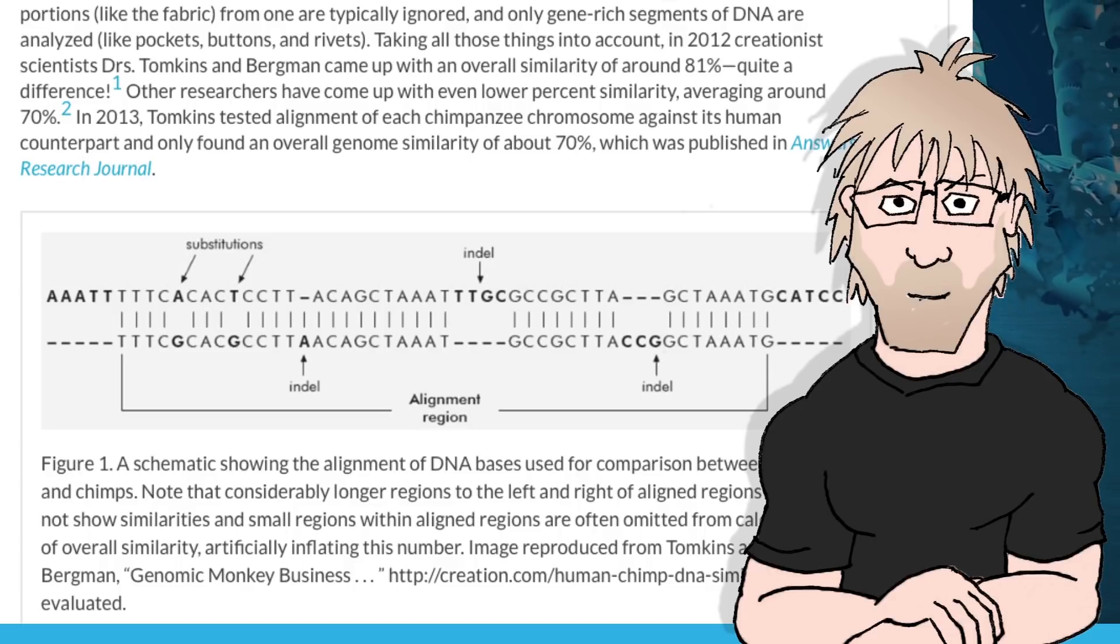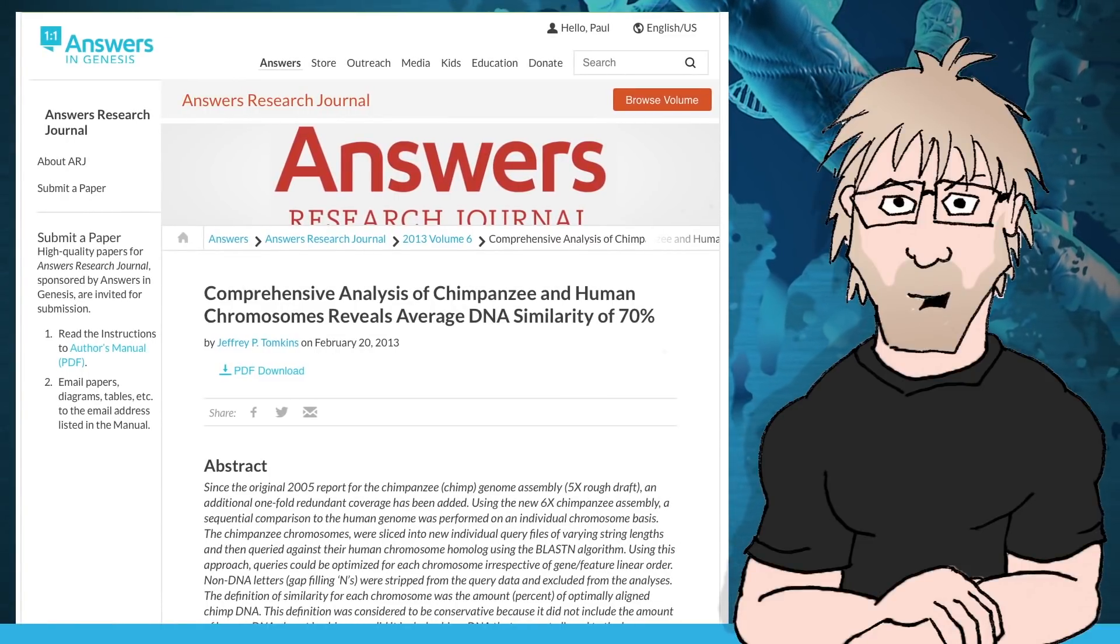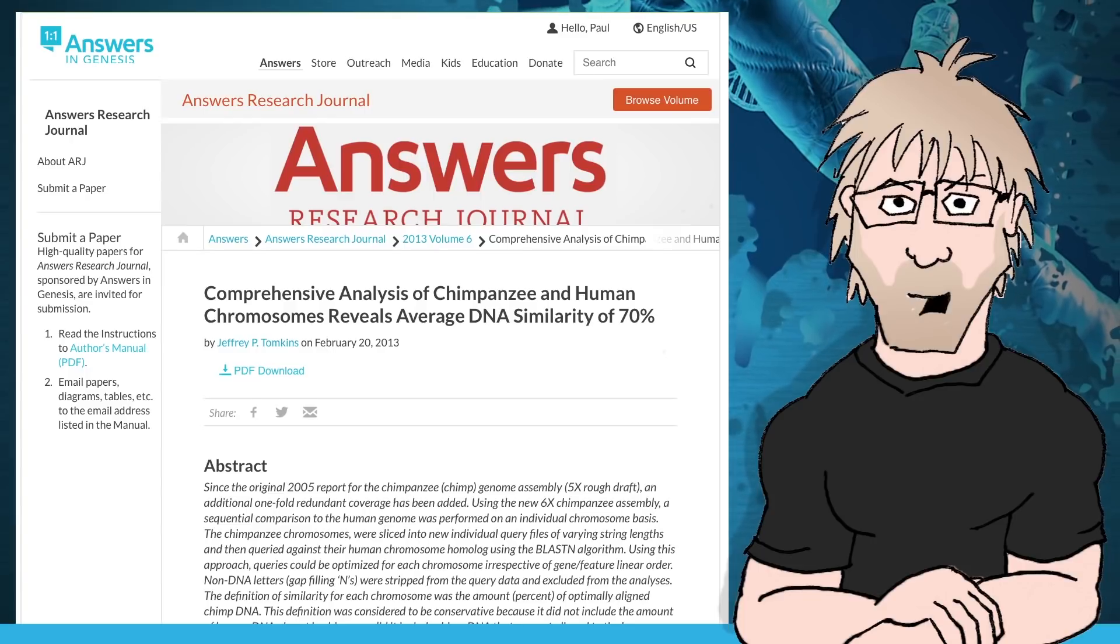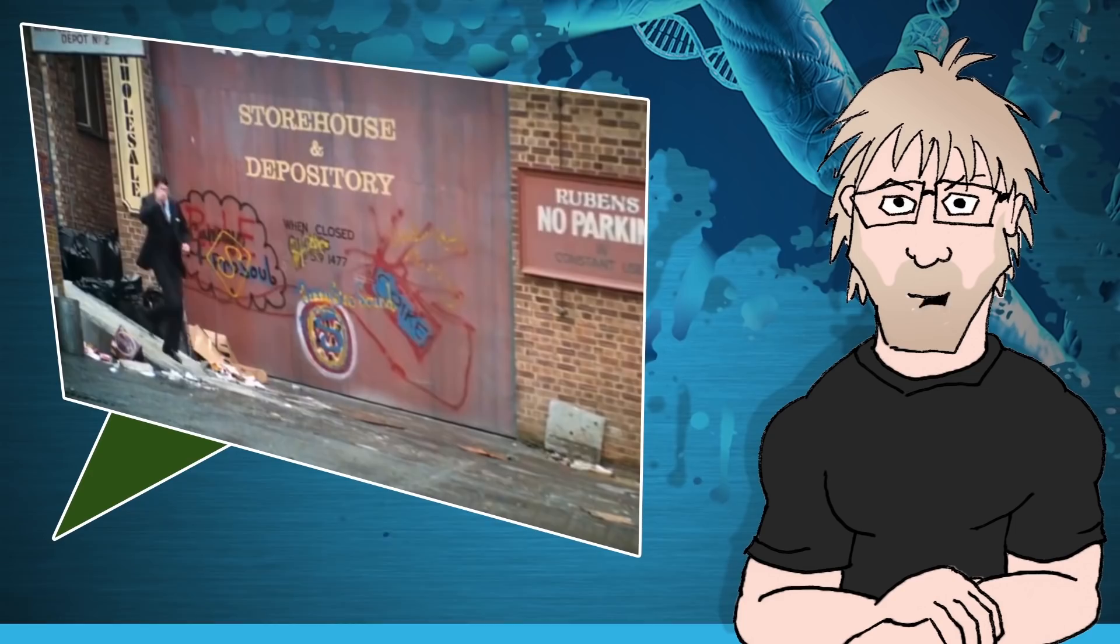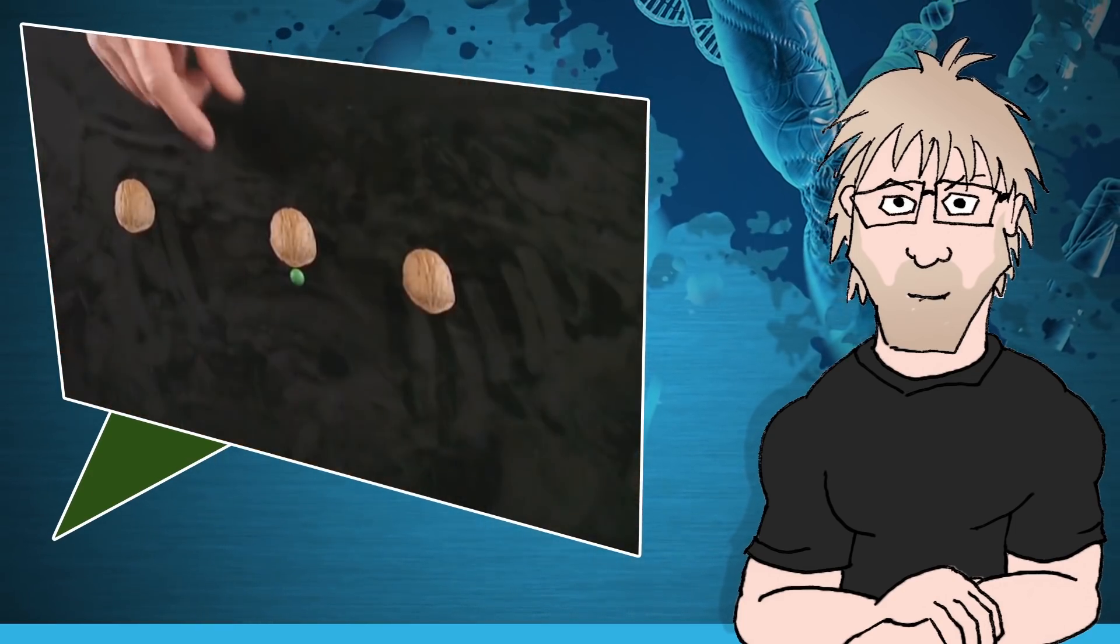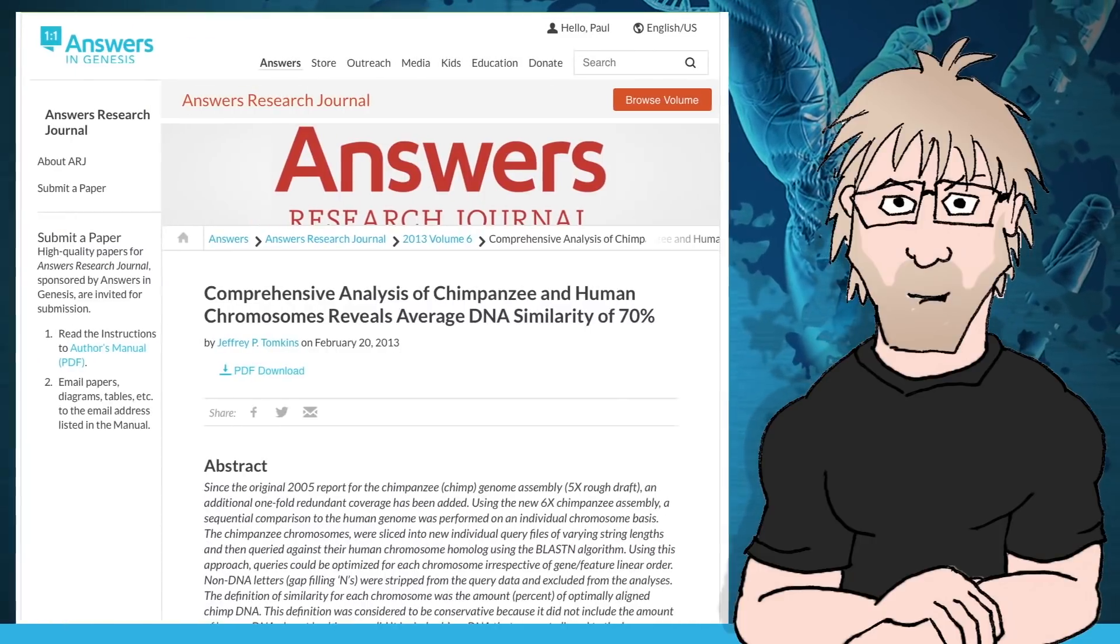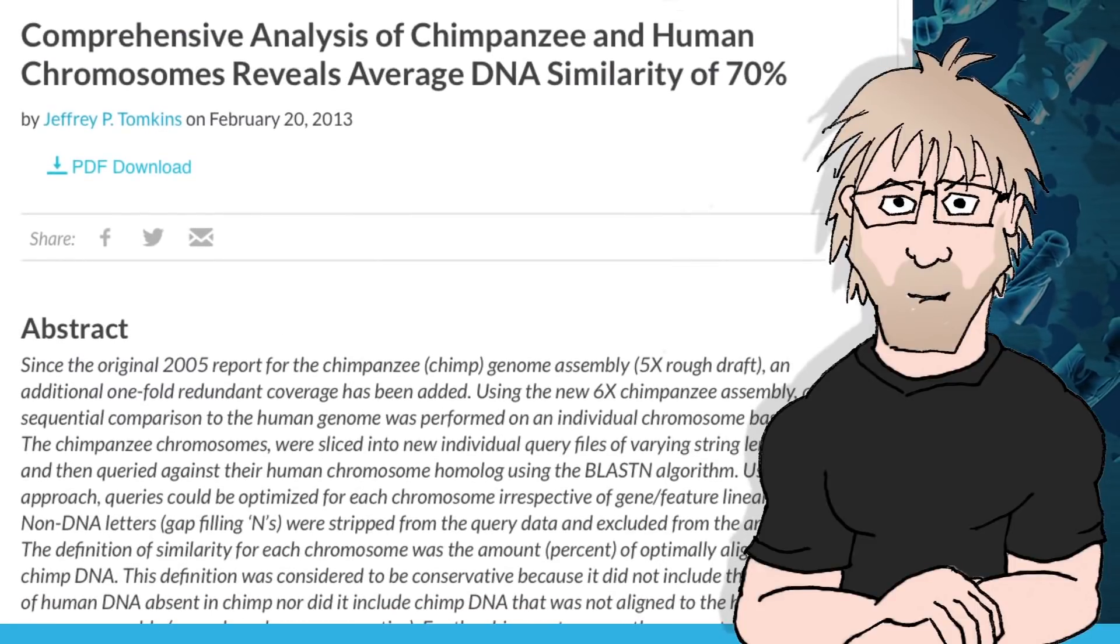Let's find out who these other researchers are. Wait, what? The other researchers are Jeffrey Tompkins? AIG pitted two sources against each other, and they're the same person? Despite the shell game, at least we finally have the source for this 70% similarity number. Comprehensive Analysis of Chimpanzee and Human Chromosomes Reveals Average DNA Similarity of 70% by Jeffrey P. Tompkins on February 20th, 2013.